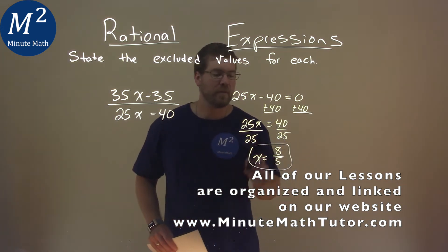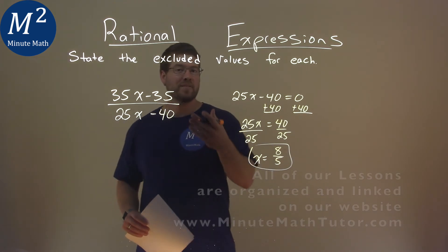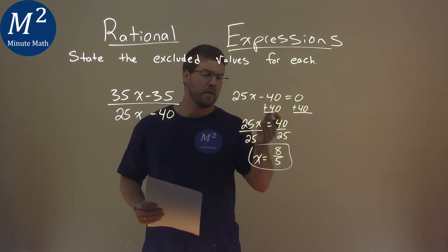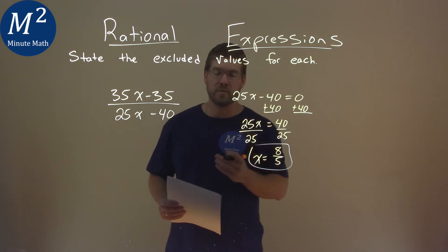And so 8 fifths, when plugged in for x, makes our denominator equal to 0, which we can't divide by 0. So 8 fifths is our excluded value.